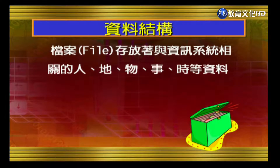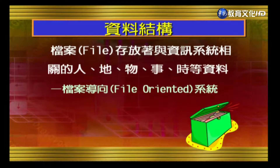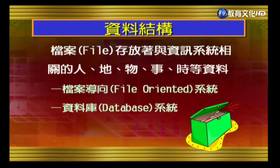Data refers to facts about people, places, things, time, and events that occur around us — these are all called data. This data is related to information systems and is stored in files. There are two ways to process this data: one is called a file-oriented system, and the other is a database system. Both systems have their advantages and disadvantages.